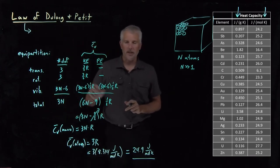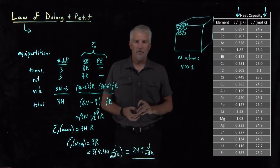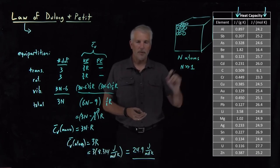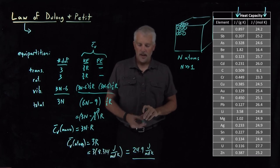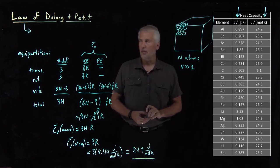This fact has been known for a very long time, that the heat capacity of metals, of in fact monatomic solids, whether they're metals or not, is typically very close to 24.9 joules per mole Kelvin.